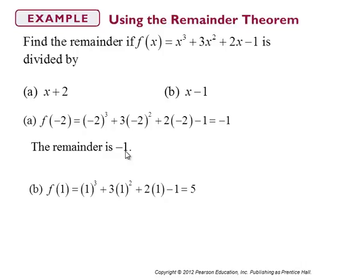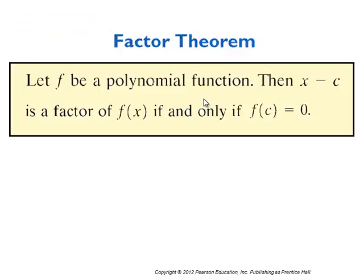It would be a factor if the remainder were 0. What would be the remainder of dividing by x − 1? Just take F(1), and the result is 5. So x − 1 is also not a factor of that polynomial, because if it were, the remainder would be 0. For the factor theorem: if you want to find out whether x − c is a factor of your polynomial, just take F(c). If F(c) = 0, that's the same as saying x − c is a factor of the polynomial.